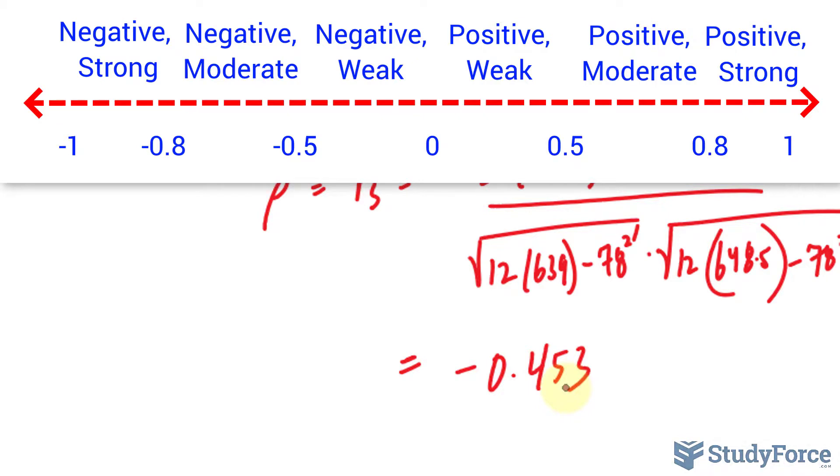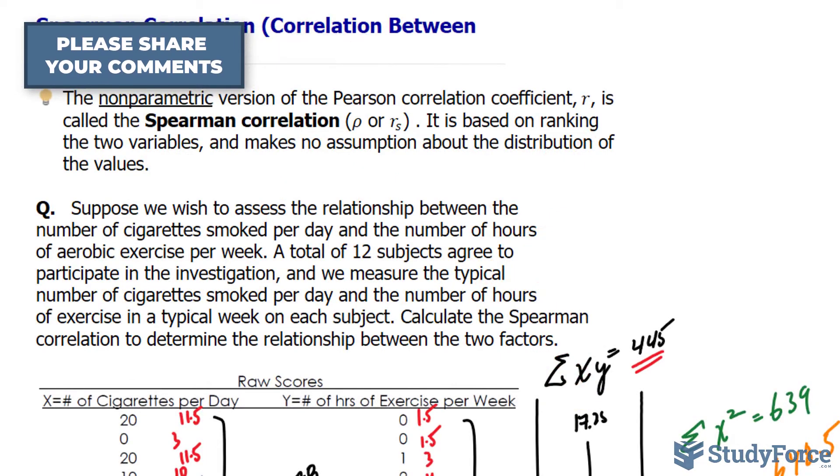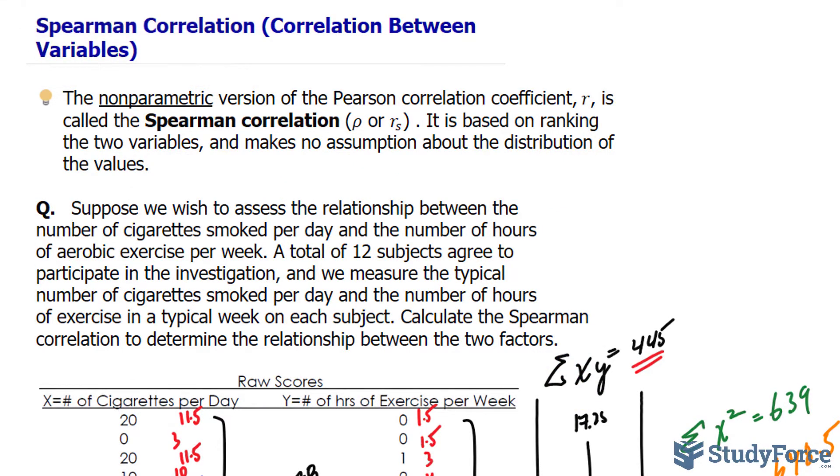What this tells us is that there seems to be a weak inverse relationship between the number of cigarettes smoked per day and the number of hours of exercise per week. And so there you have it. That is how to calculate the Spearman correlation coefficient.